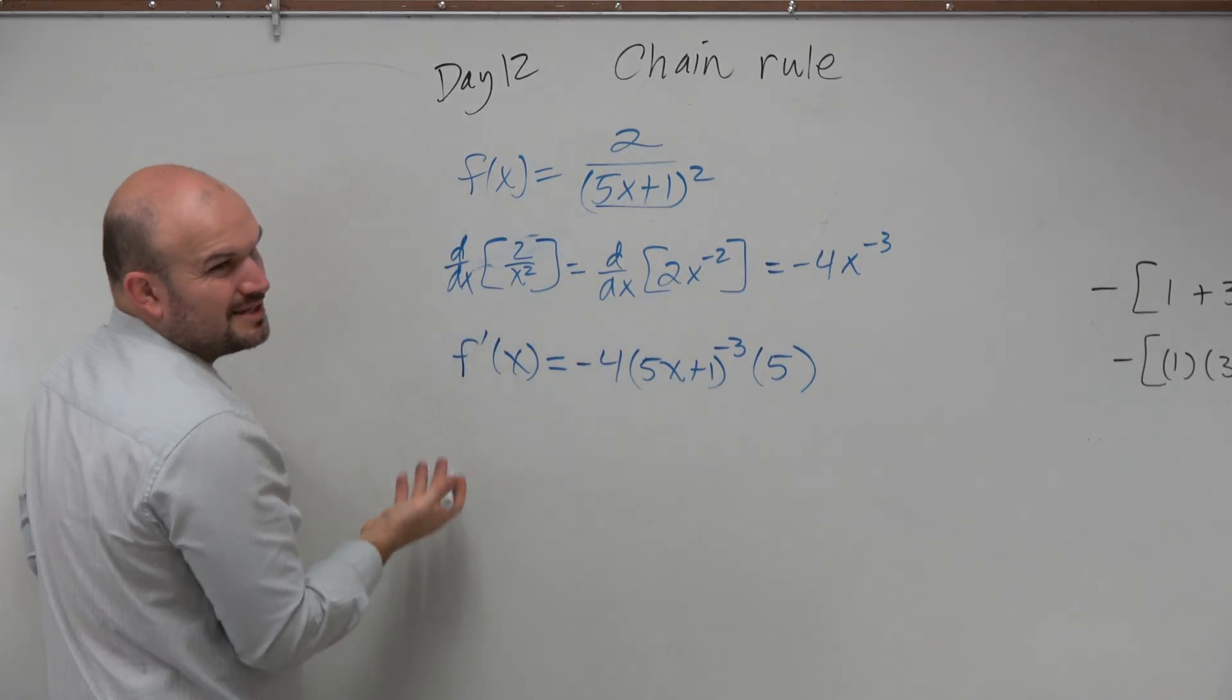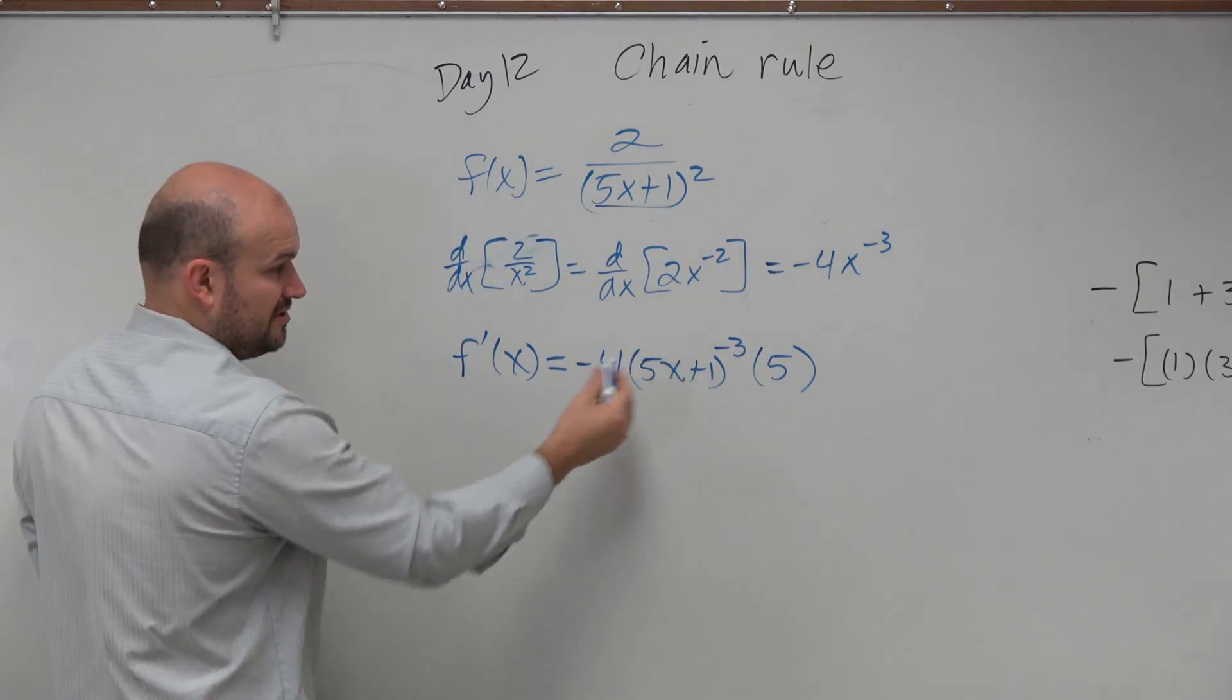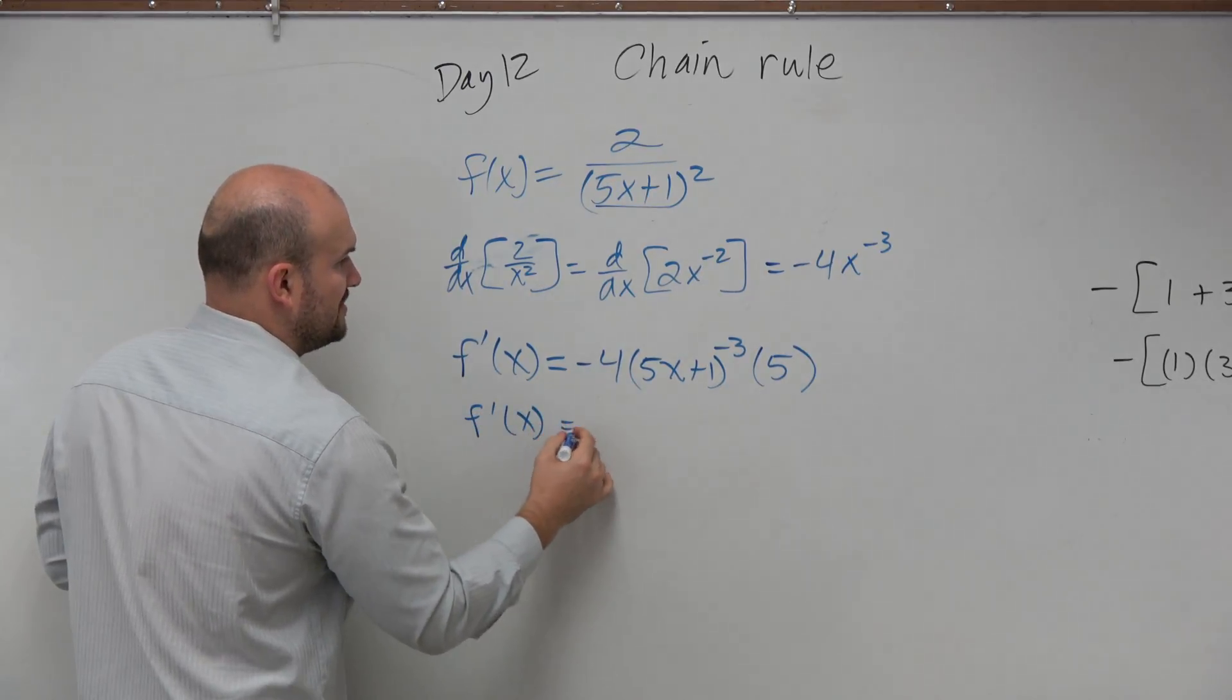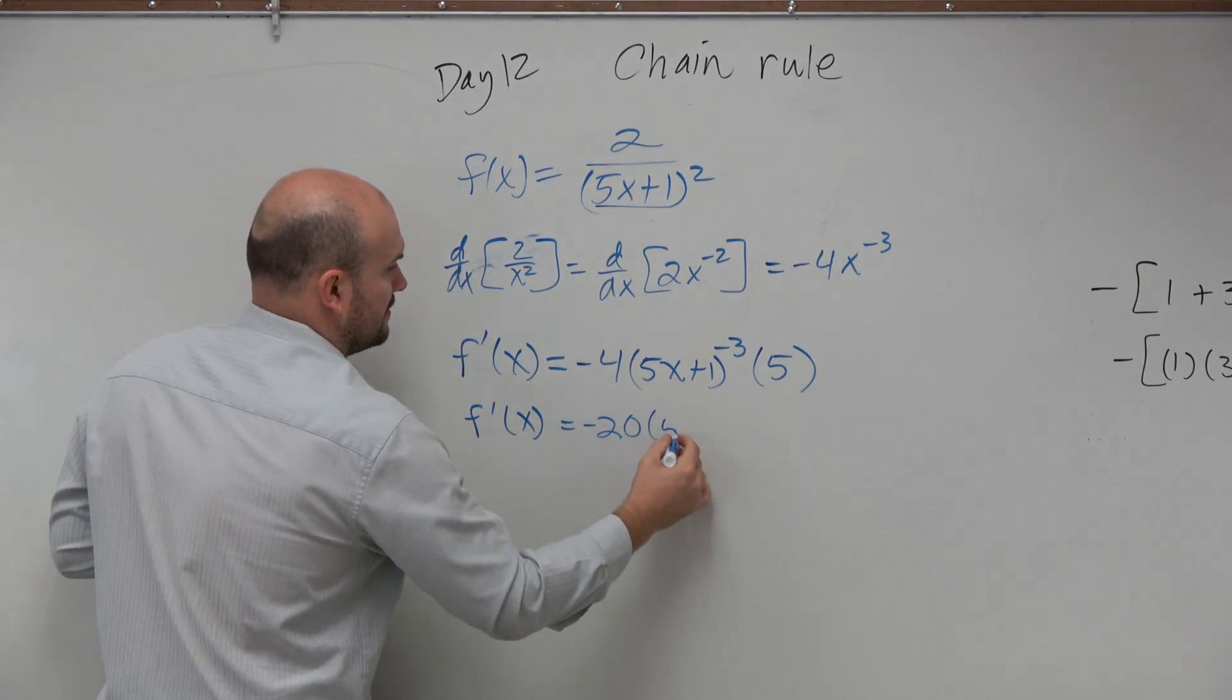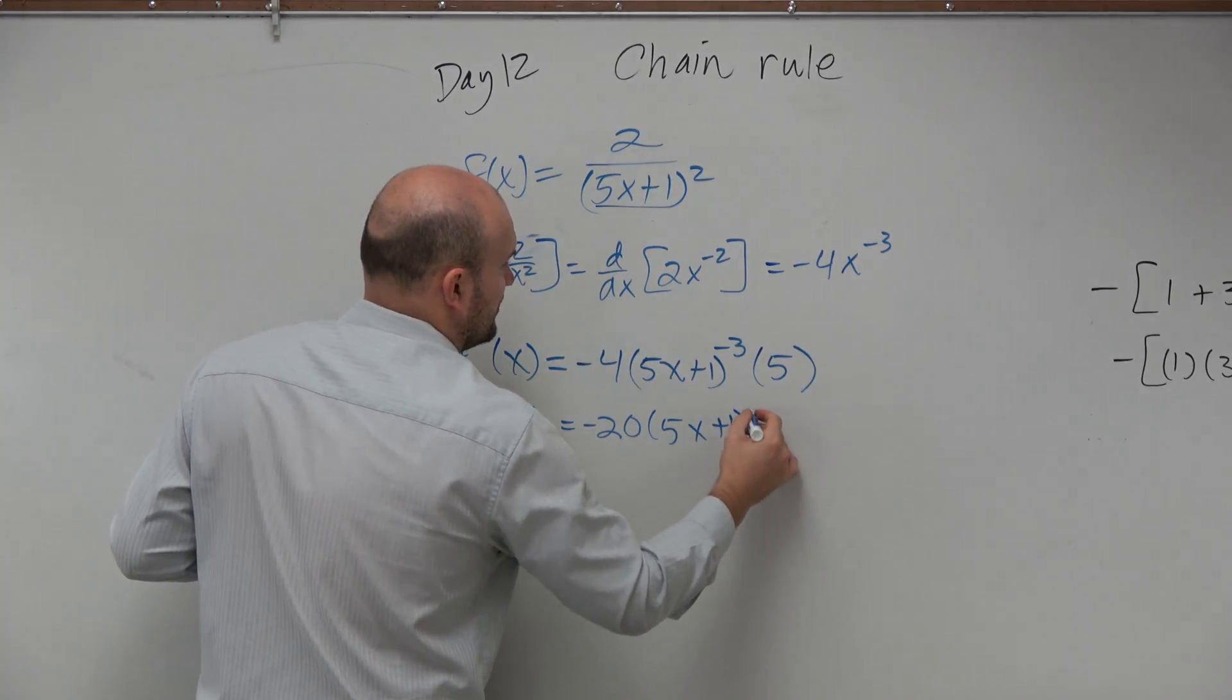This is correct. But typically, guys, on a multiple choice test, it's never going to be written like this. f prime of x is going to be negative 20, 5x plus 1, raised to the negative third.